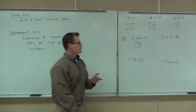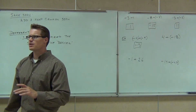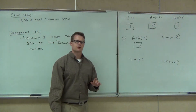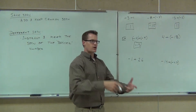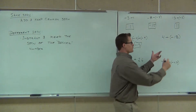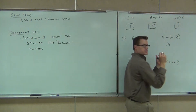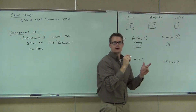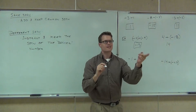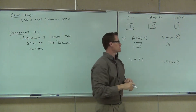Next one, we've got 4 plus negative 18. Same sign or different signs? Different. Add or subtract? Subtract. So we're going to get 14 here. And is it positive or negative? Negative. Good. Why is it negative? Because 18 is the bigger number.